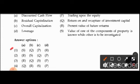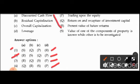The right answer is option 2: A-R (discounted cash flow = present value of future return), B-S (residual capitalization = value where one component is known), C-Q (overall capitalization = return on and recapture of investment capital), and D-P (leverage = trading upon the equity).